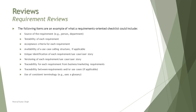Now let's understand what a requirement review checklist would look like. As an example, a requirement-oriented checklist could include: the source of the requirement (person or department), testability of each requirement, whether acceptance criteria are well-determined, availability of the use case calling structure if applicable, unique identification of each requirement, versioning of each requirement or user story or use case, traceability from business or marketing requirements, and use of consistent terminology. Having standard terminology helps easily identify certain things, and generally it goes to the organization level using certain standards.